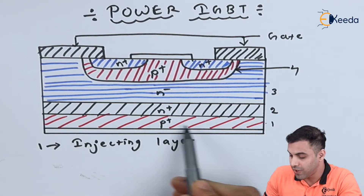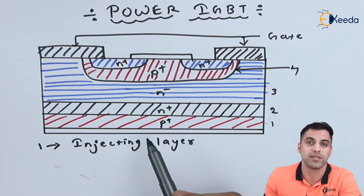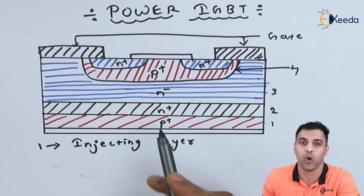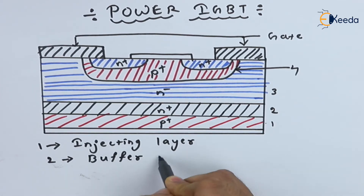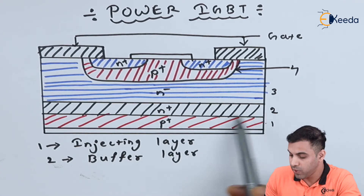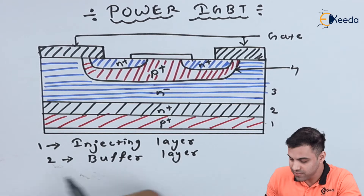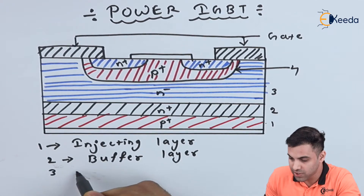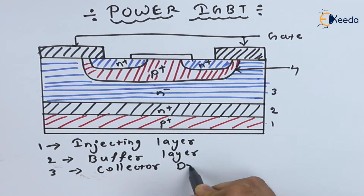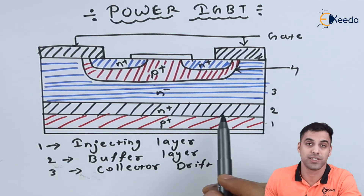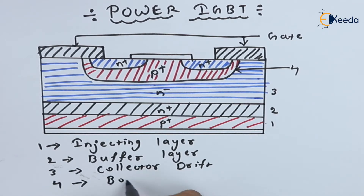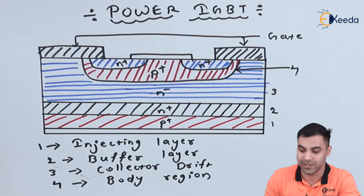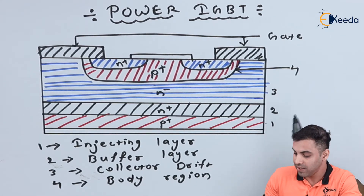Number one is called the injecting layer, and it consists of P-plus, meaning heavily doped holes. Number two is called the buffer layer, which consists of N-plus electrons. Number three is called the collector drift, which consists of N-minus electrons. Number four is called the body region.